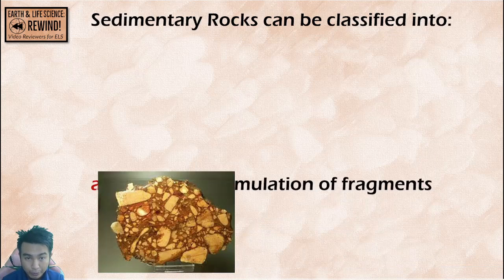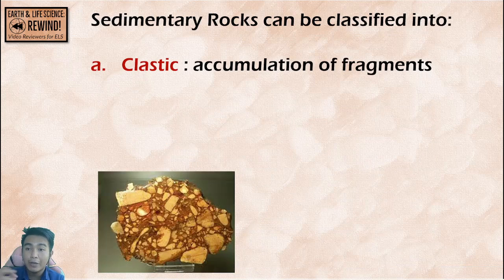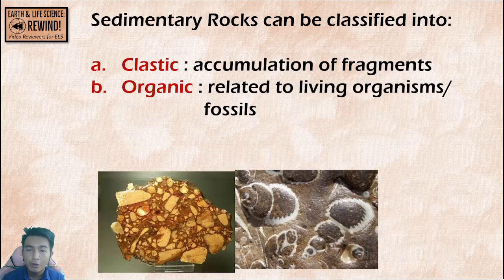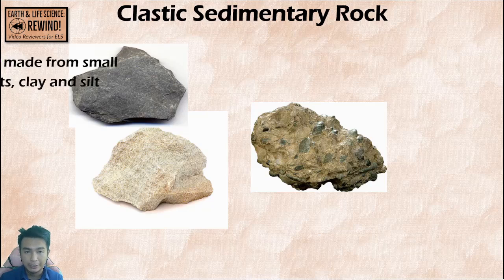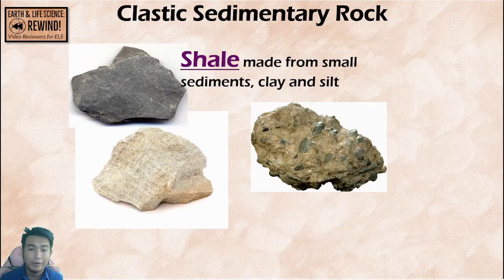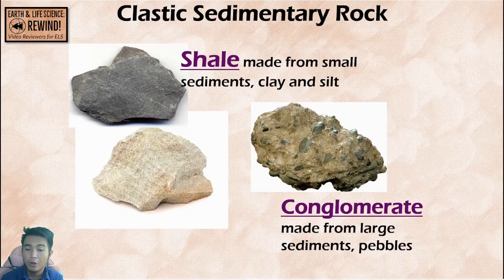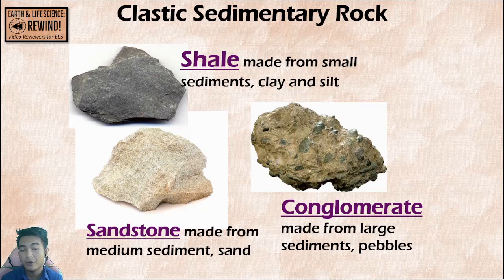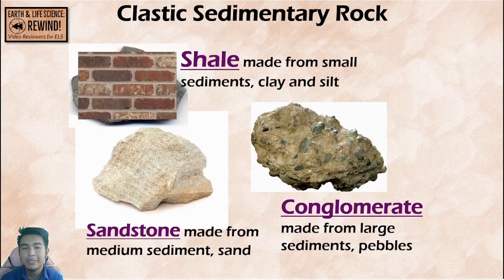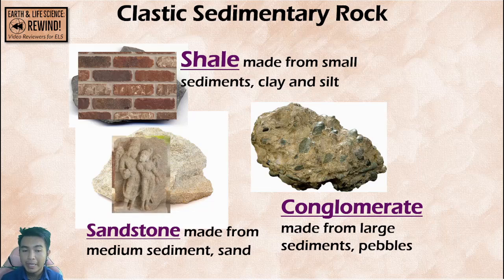Sedimentary rocks can be classified into three types. Clastic — the accumulation of sediments and fragments. Organic — related to living organisms. And chemical — formed from chemical substances at the bottom of water bodies. Examples of clastic sedimentary rocks are shale, made of very small sediments like clay and silt; conglomerate, made of large sediments and pebbles; and sandstone, made of medium sediments like sand. Shale can be used as bricks, and sandstone as decorations and sculptures.